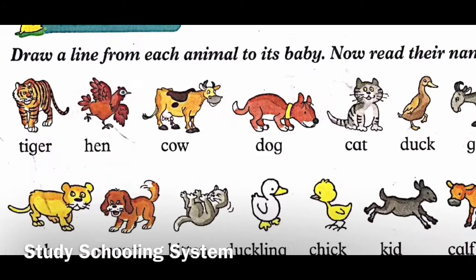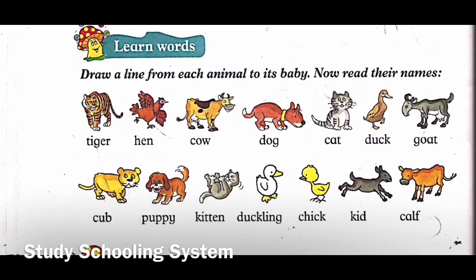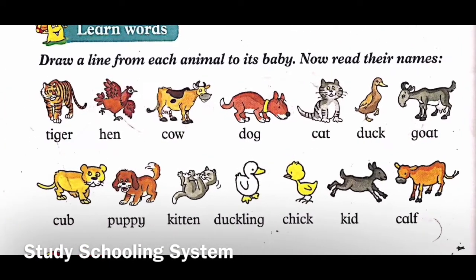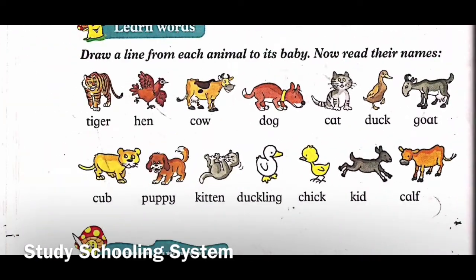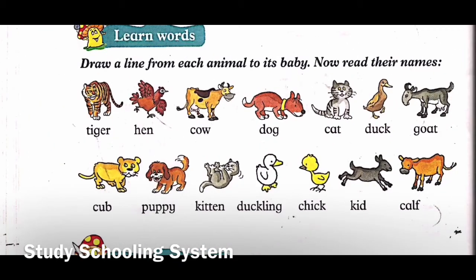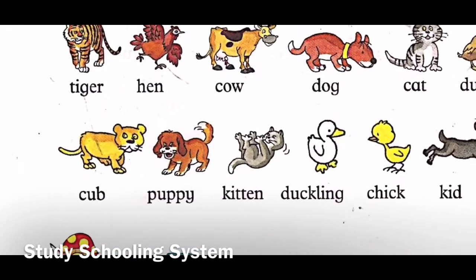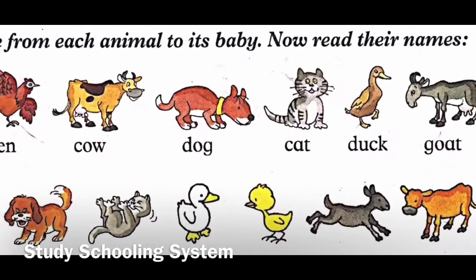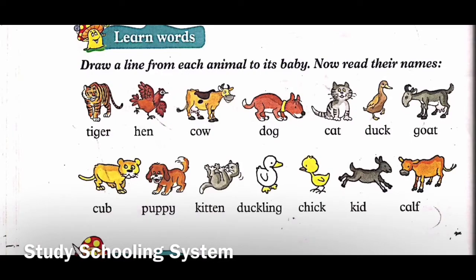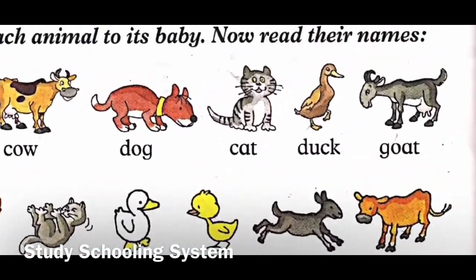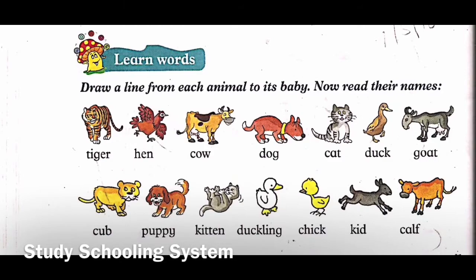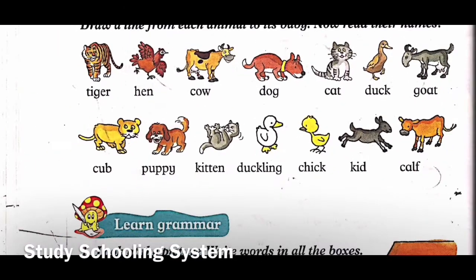Next, cow - what is a cow's baby called? Yes, a calf. You can even see from the picture that the calf looks like a baby cow. Draw a line from cow to calf. Next, dog - it's so easy, it's called a puppy. Draw the line. Next, cat - of course a cat's baby is called a kitten. Then duck - its baby's name is duckling. Draw a line.